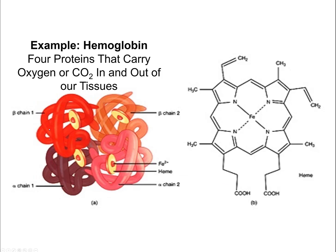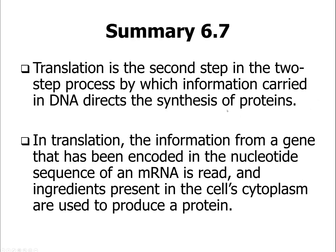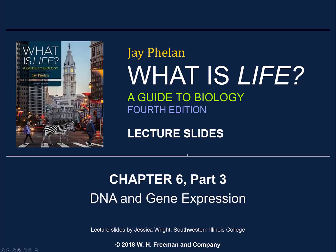Hemoglobin is a good example: it has four subunits, each holding a particular iron molecule within the heme group. That iron complex, held by each protein subunit, is what carries oxygen or CO2 in and out of tissues. Translation is the second step in the two-step process — information encoded in the nucleotide sequence of messenger RNA is read, and the ingredients in the cell cytoplasm are used to produce a protein, expressing the gene.